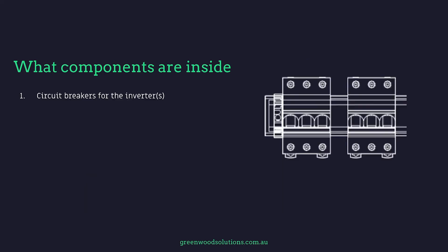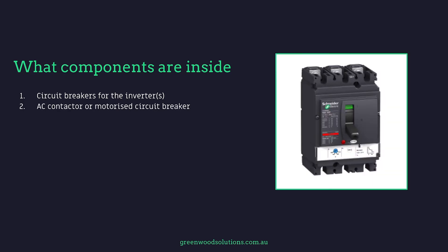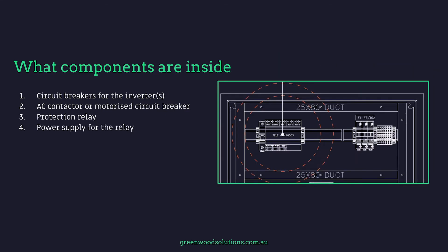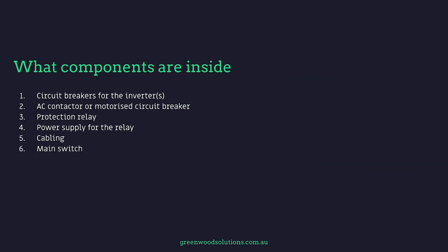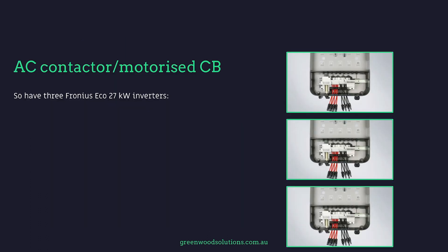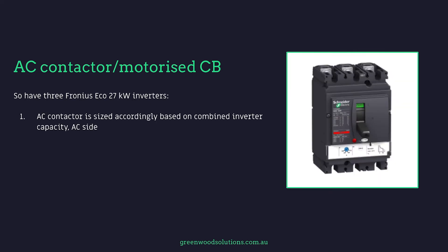So what components are inside? Well, there's a circuit breaker for the inverters, an AC contactor or motorized circuit breaker, a protection relay, a power supply for the relay, cabling, and a main switch. For example, say we have three Fronius Eco 27 kilowatt inverters — we'll need three corresponding circuit breakers in the secondary protection board, say 50 amps each. But as the designer installer, you select these. The AC contactor is sized accordingly based on combined inverter capacity on the AC side.